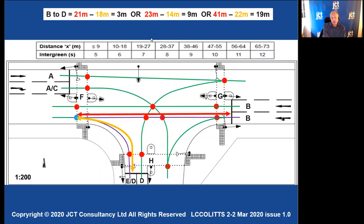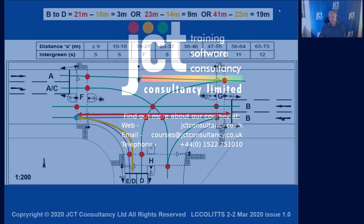Now, of the three X distances, 3 meters, 9 meters or 19 meters, which one do we use for working out the intergreen?